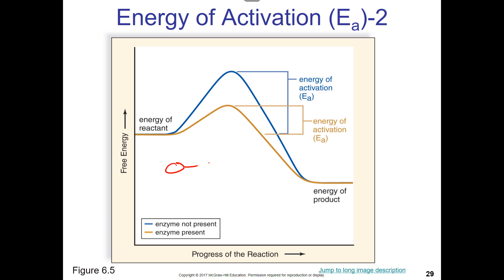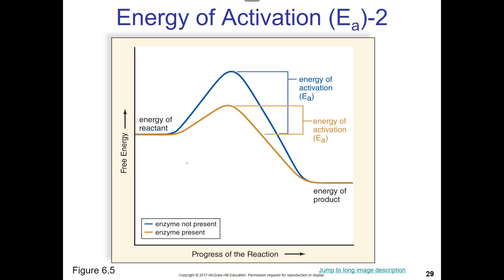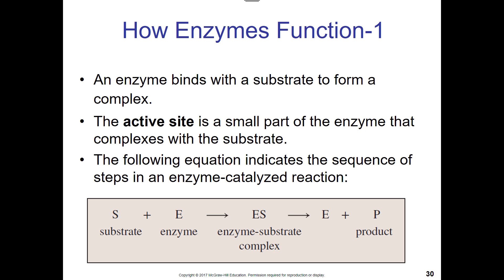A real example: a disaccharide like maltose has a covalent bond that needs to be broken. An enzyme binds to it and stretches it a little bit — like bending a stick and putting it under tension, making it more likely to snap in the middle. That's what the enzyme maltase does: it bends maltose a bit and breaks it down into two glucoses.